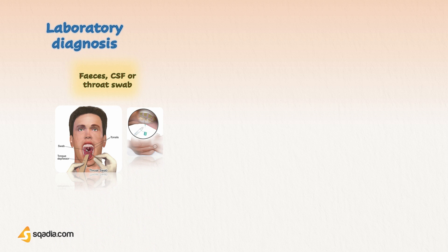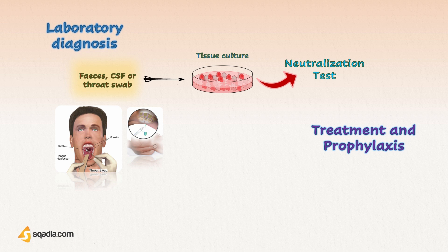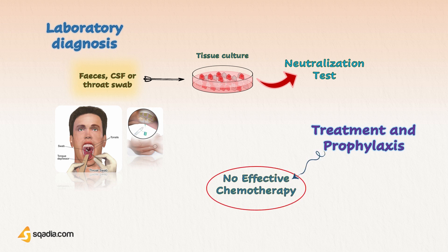For laboratory diagnosis of echoviruses, specimens of feces, CSF, or throat swabs can be inoculated directly onto monkey kidney tissue culture. The identification and typing of the virus can be performed with neutralization tests. Serological tests for diagnosis are not recommended. No effective chemotherapy is available against echoviruses, and a vaccine is yet to be made available.